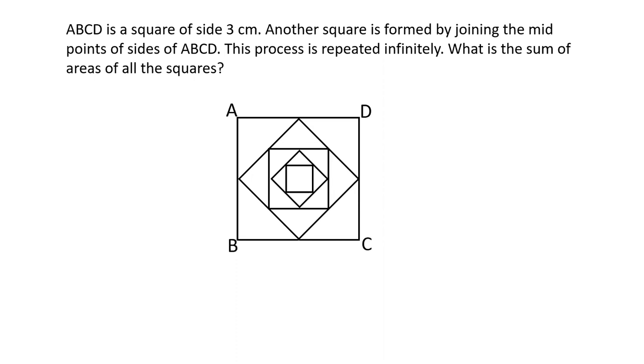Today I have brought a question in which there is a square given ABCD of side 3 cm. Now another square is formed joining the midpoint of ABCD. So suppose the midpoint of ABCD are PQRS. So this is another square which is formed by joining the midpoints.